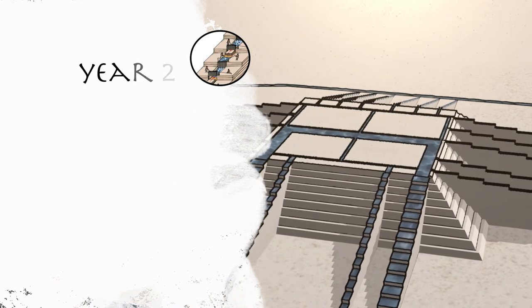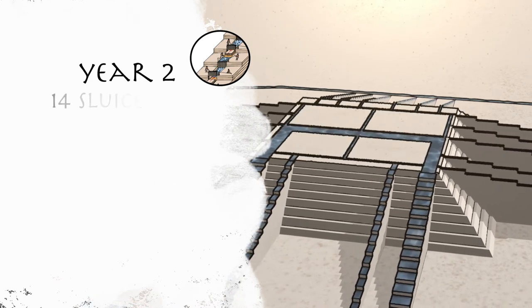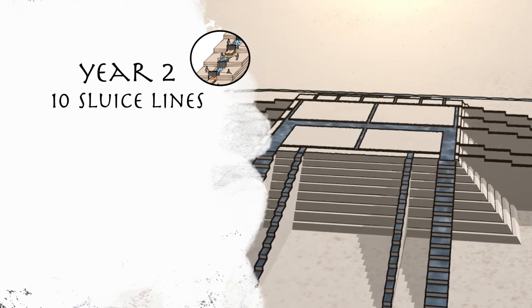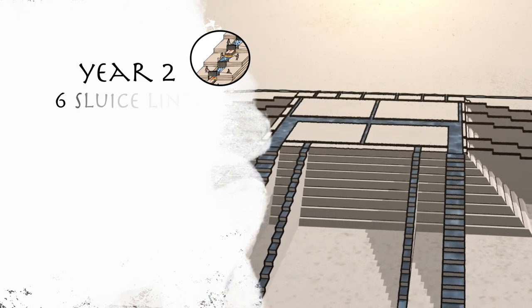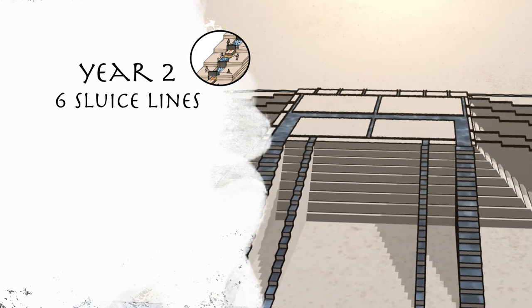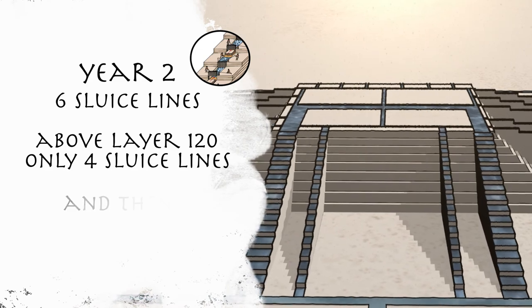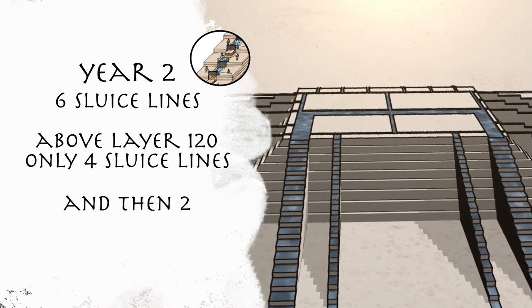During the second year of construction, the number of working sluice lines reduced from 14 to 12 to 10, and by the 120th layer, only 6 were operational. Above the 120th layer, 4 sluice lines were used, and then only 2. Two sluice lines reached the top of the pyramid.